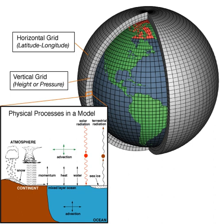Ocean resolutions tend to be higher; for example HadCM3 has 6 ocean grid points per atmospheric grid point in the horizontal. For a standard finite difference model, uniform grid lines converge towards the poles, which would lead to computational instabilities, so the model variables must be filtered along lines of latitude close to the poles. Ocean models suffer from this problem too, unless a rotated grid is used in which the north pole is shifted onto a nearby landmass. Spectral models do not suffer from this problem. Some experiments use geodesic grids and icosahedral grids, which, being more uniform, do not have pole problems. Another approach is to deform a Cartesian cube such that it covers the surface of a sphere.